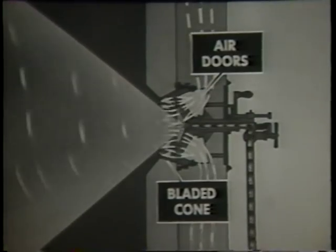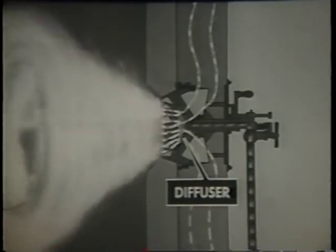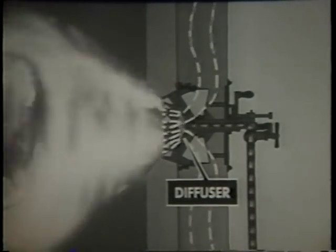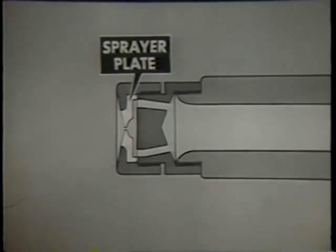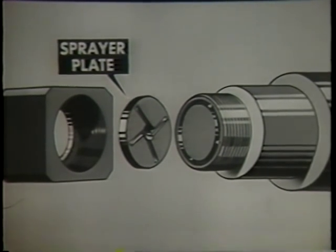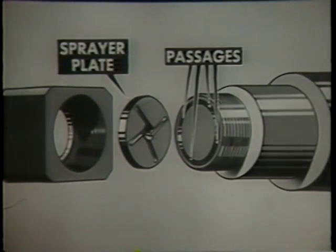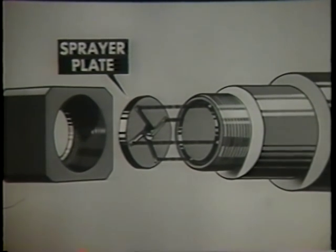Meantime, in the burner register, air provided by the forced draft blower is given a rapid rotating motion by the air doors and bladed cone and mixed with the oil spray. The mixture of oil and air enters the furnace where combustion takes place. The diffuser prevents the air blast from blowing the flame from the atomizer tip. In an exploded view, you can see how the oil passages in the atomizer nozzle guide the oil into the slots of the sprayer plate, how the slots give the oil a very rapid whirling motion in the whirling chamber, and how the whirling oil emerges from the sprayer plate orifice as a hollow cone of mist-like oil particles.